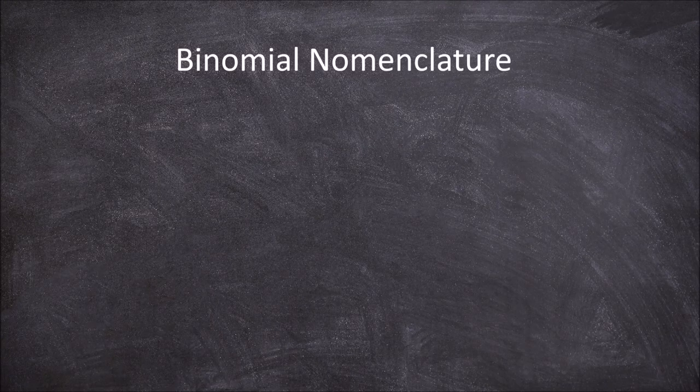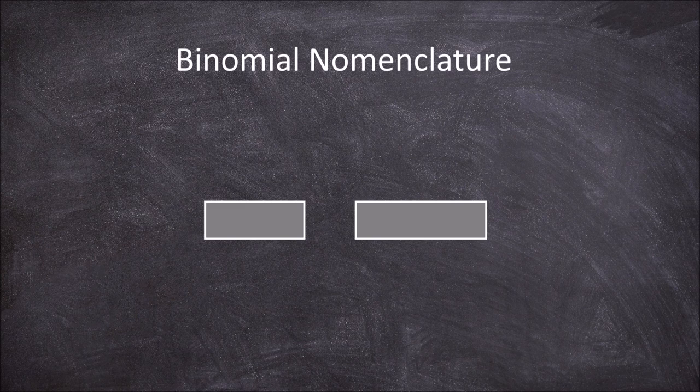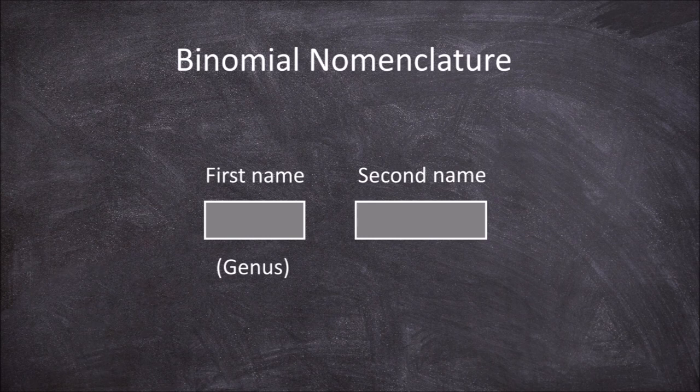In this video we're going to go over binomial nomenclature. Binomial nomenclature is the system where two names are given to name a species. The first name refers to the genus of the species, and the second name refers to the specific species within that genus.